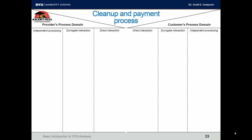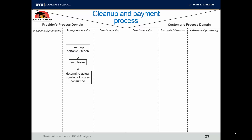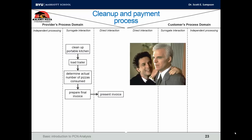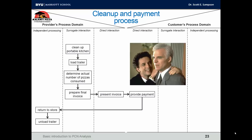Finally, we get to the cleanup and payment process. Malawi's people clean up the portable kitchen and load the trailer. They determine the actual number of pizzas consumed and use that to prepare a final invoice, which they present to the client. The client then provides payment — either a credit card or a check. The Malawi's people return to the store and unload the trailer. At the same time, the client or their workers clean up the serving and eating tables.